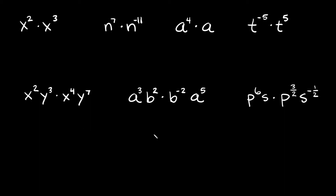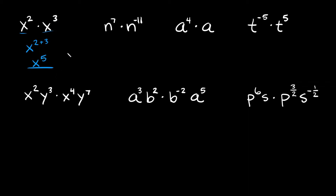I've got about seven examples here, so let's start with this one in the top left. We have x squared times x cubed. So how would you simplify this? It's actually pretty easy — we have an x and we have an x, so you just keep the x and then you just add the exponents together. So two plus three is five, and your simplified answer would be x to the fifth power.